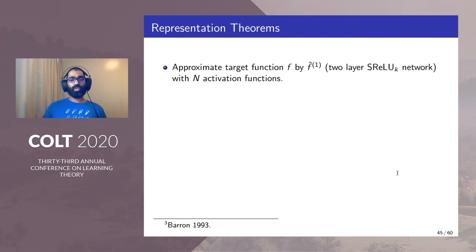We first approximate the target function f by f̂₁ which is a two-layer SReLU_k network with n activation functions. Standard Fourier analytic techniques allow us to show that the error is at most 1/n times c_f² where c_f is a norm on the Fourier transform of f.